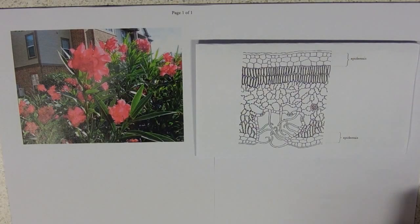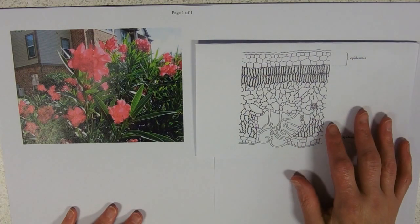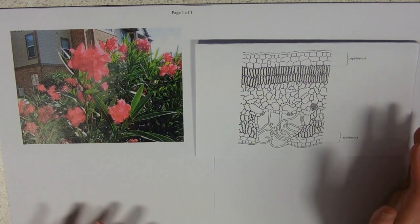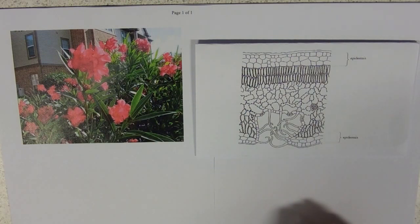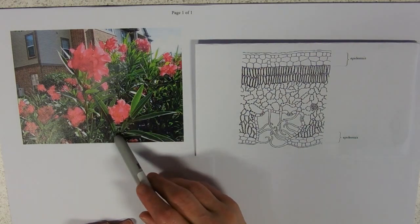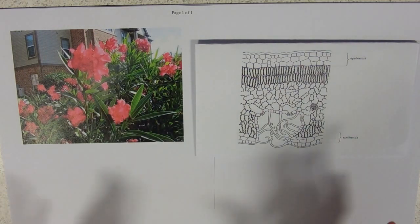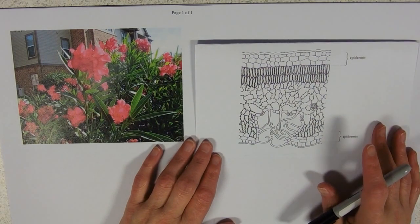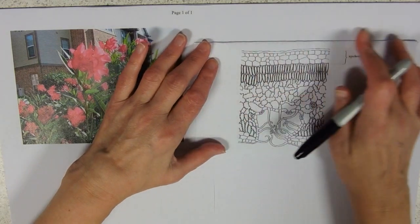Okay, that's better. So this is oleander, often used as hedging plants. You see them everywhere in the Mediterranean. You can see from the photograph, now it's in focus, that you've got these very thin leaves cutting down surface area.